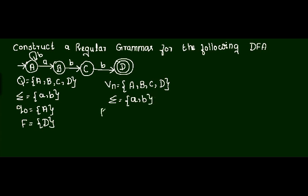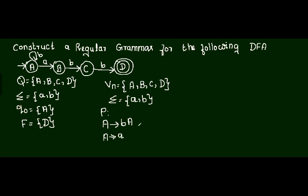Now I want to find the production rules. Present state A on input b goes to next state A. Since A is not a final state, I write only one production: A → bA. Present state A on input a goes to next state B. Since B is also a non-final state, I write only one production: A → aB.